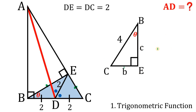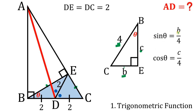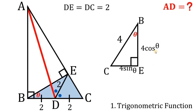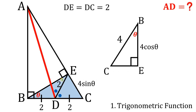From the right triangle BEC with hypotenuse 4: BE equals 4 cosine theta and CE equals 4 sine theta. So BE is 4 cosine theta and CE is 4 sine theta.